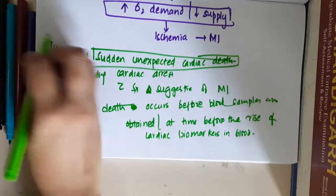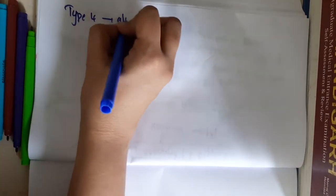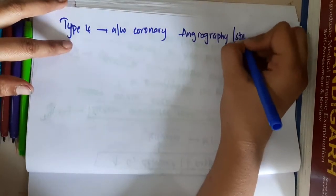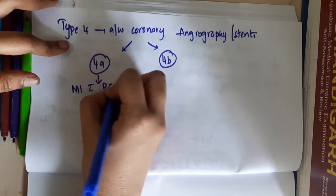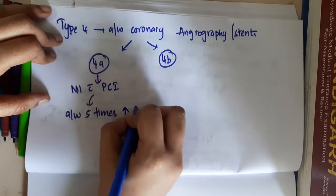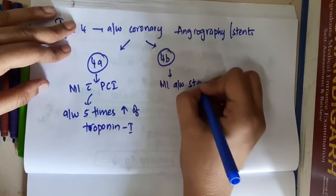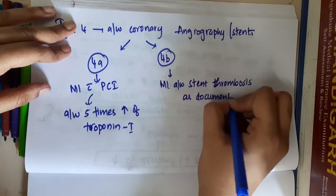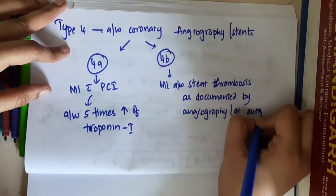Then we have Type 4, which is mainly associated with coronary angiography or stents. It is of two sub-types: Type 4A is MI with percutaneous intervention, associated with five times elevation of troponin I. Type 4B is MI associated with stent thrombosis, documented by angiography or at autopsy.